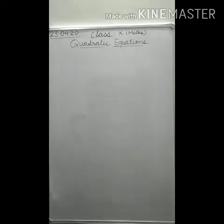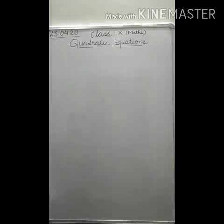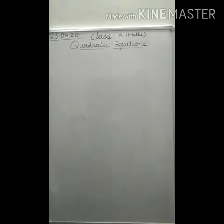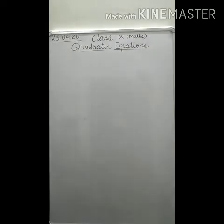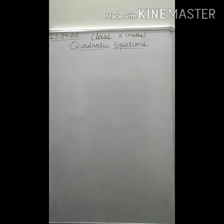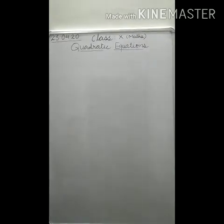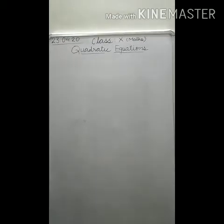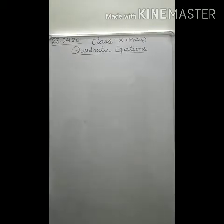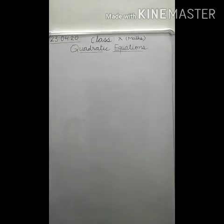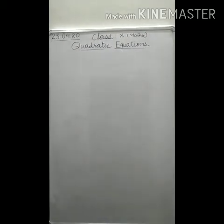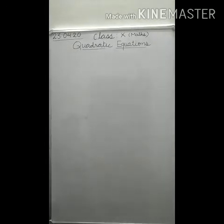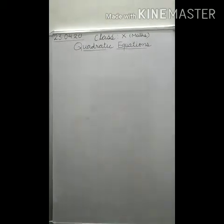Before starting this chapter, let us recapitulate the things which we have done in the past. In chapter number 2, that is Polynomial, we have studied the polynomial and its types. When we talk about the types of polynomials, we know that a polynomial can be categorized on two bases — one is on the basis of terms and another is on the basis of its degree. When we talk about the degree, the polynomial is basically three types: a linear polynomial, a quadratic polynomial, and a cubic polynomial. Let us again recapitulate the quadratic polynomial.